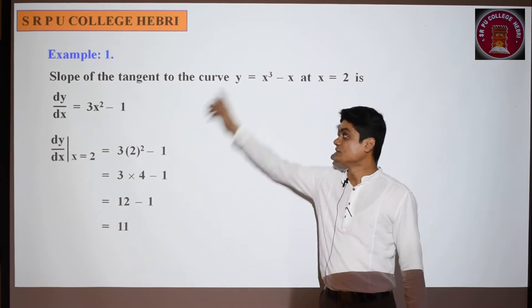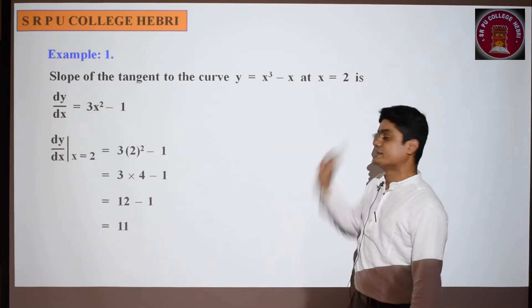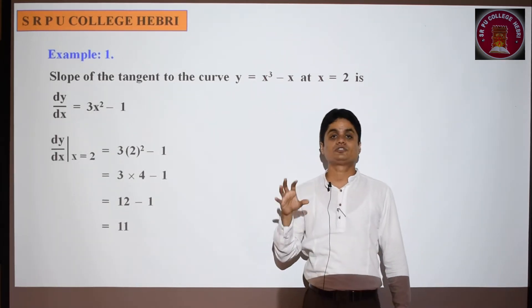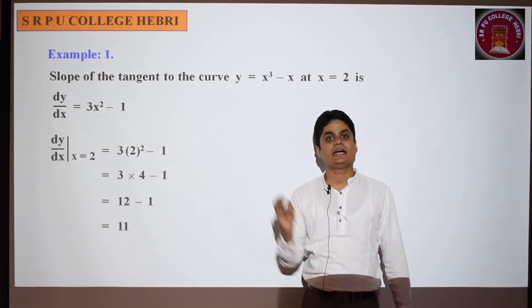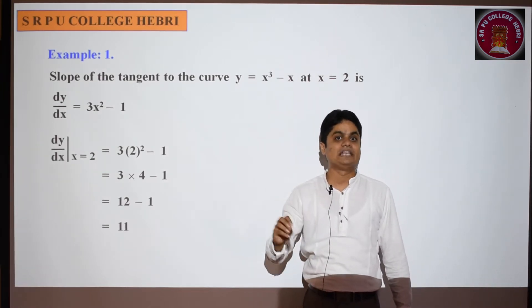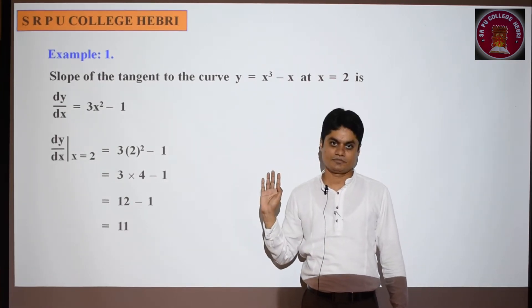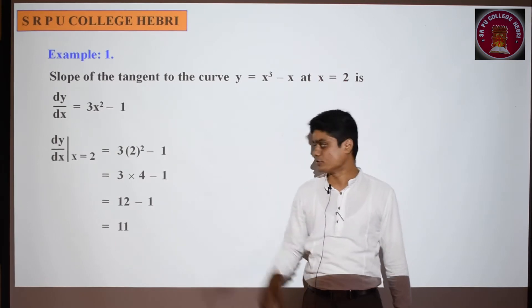This represents the slope of the tangent to the given curve at the given point. Whenever they ask you to find the slope of the tangent to a curve, differentiate and substitute the value of x and you will get the answer. I hope you understood.